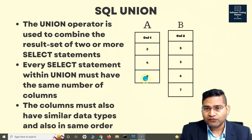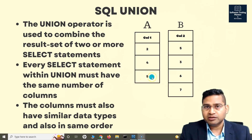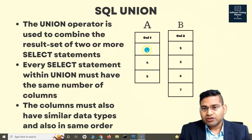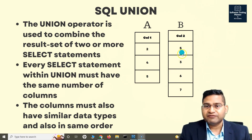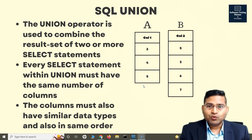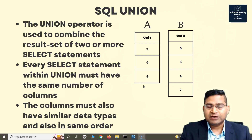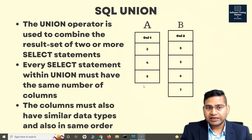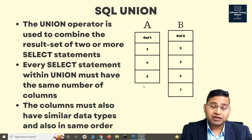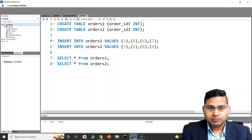Say for example, in this case I have 2, 4, 5 in table A, and then 5 is in table B as well. So the query will return 5 only once. So the result will be 2, 3, 4, 5, 6, and 7. Five is matching in both tables, so UNION will return it only once. If you want to return all the occurrences, I'll let you know once we go to the workbench.